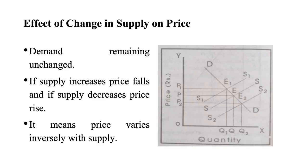With the help of a graph, when demand increases, a new demand curve D1 shifts upward and the equilibrium point moves to E1, raising price. When demand declines, the new equilibrium point is E2, lowering the price. The OX axis shows quantity and OY axis shows price. OP is the initial price, OQ is the initial quantity, and OE is the equilibrium point.